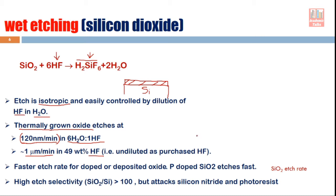If the silicon dioxide is doped with phosphorus, the etch rate becomes faster. Similarly, if the oxide is doped with boron — whether it is boron-doped or phosphorus-doped — the etch rate becomes faster. So you can remove doped or deposited SiO2 more quickly compared to thermally grown oxide.